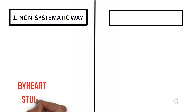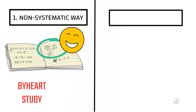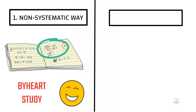The non-systematic way is very common. For example, you study step by step by rote. But once you are in the exam hall, you will know what you want to do — just memorizing. This is a non-systematic way of learning.